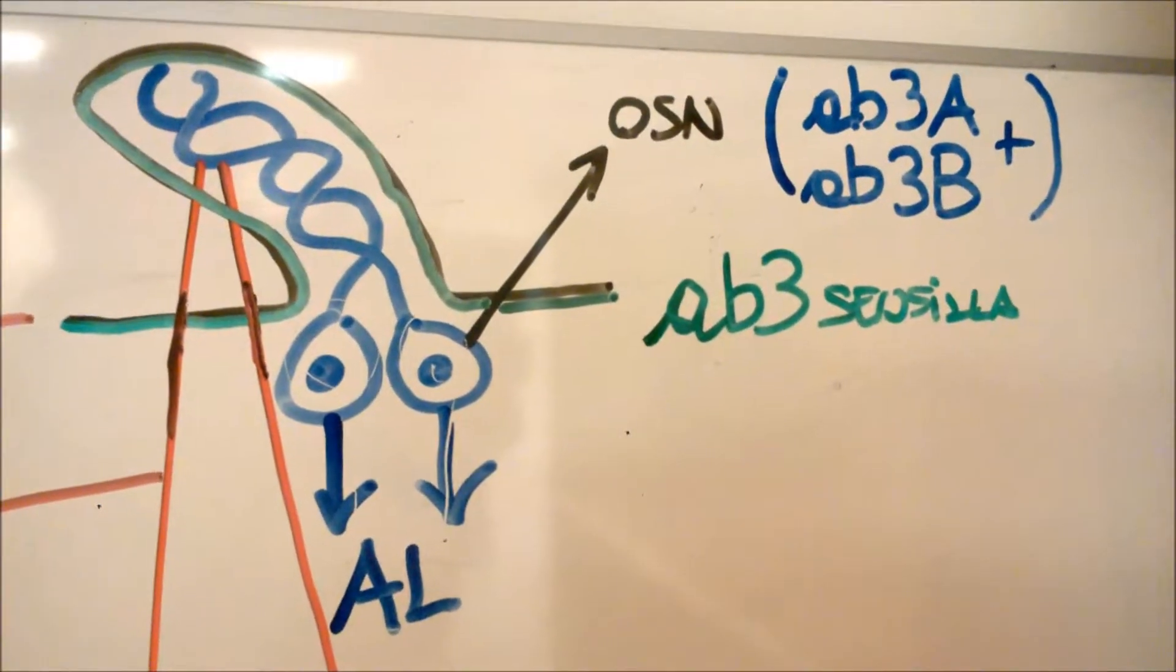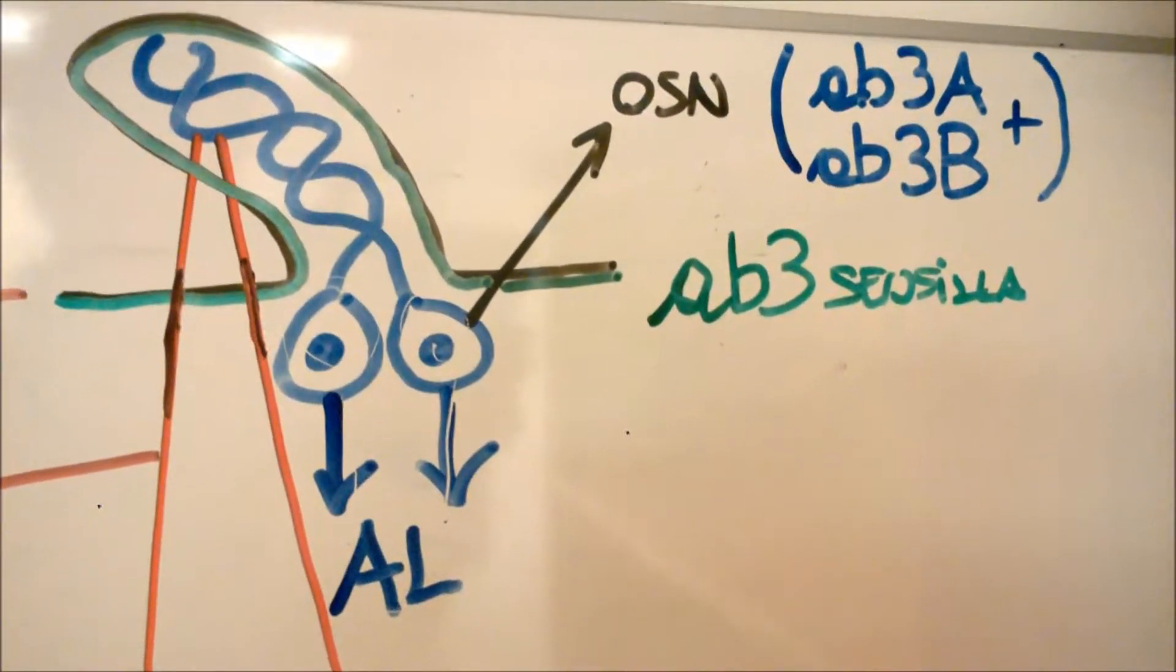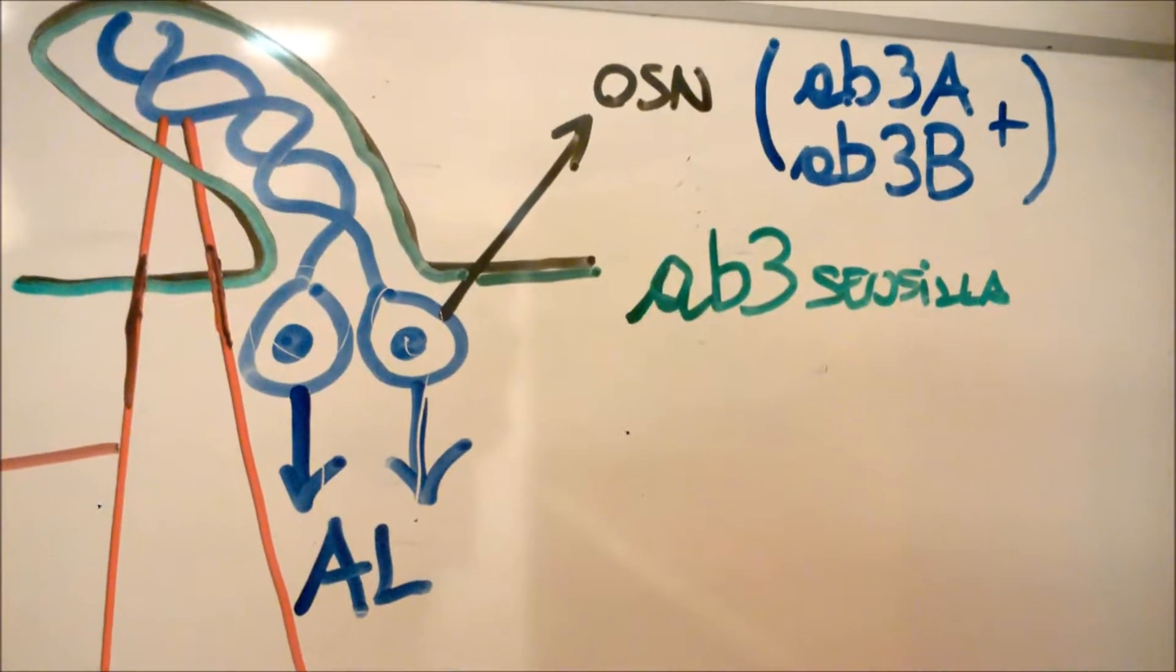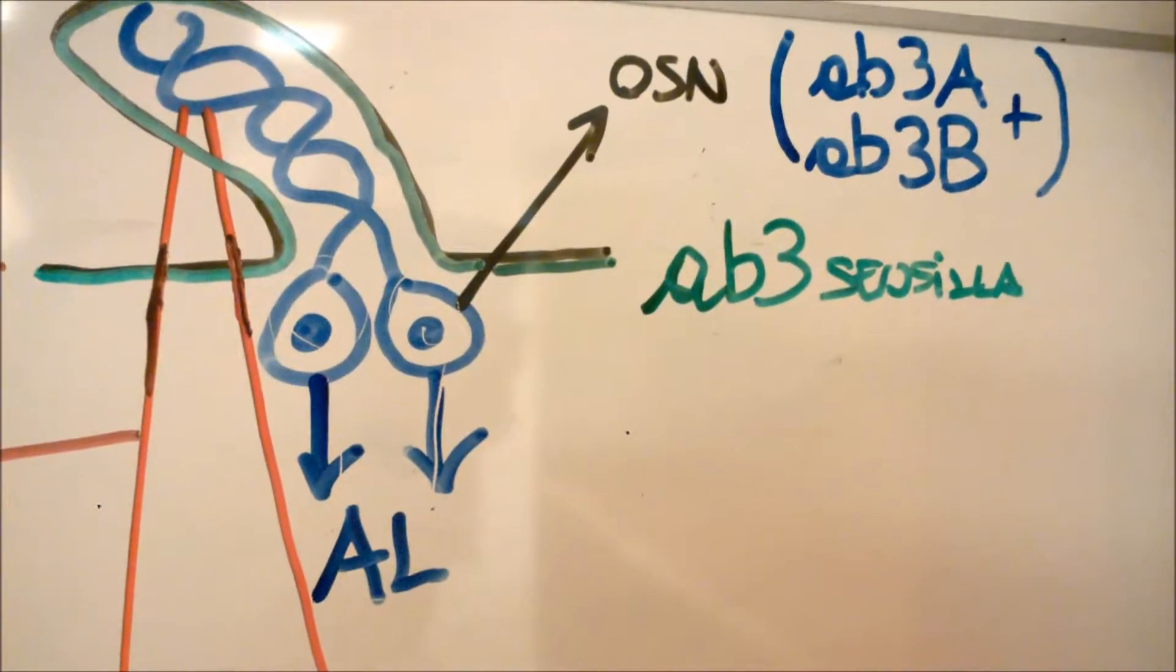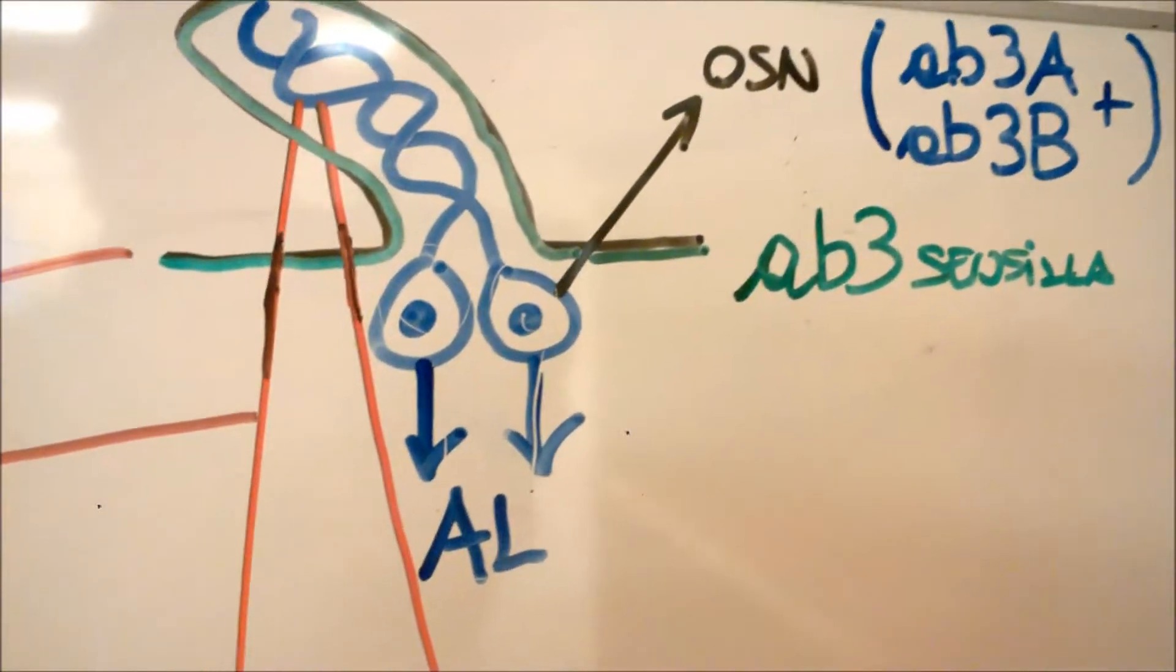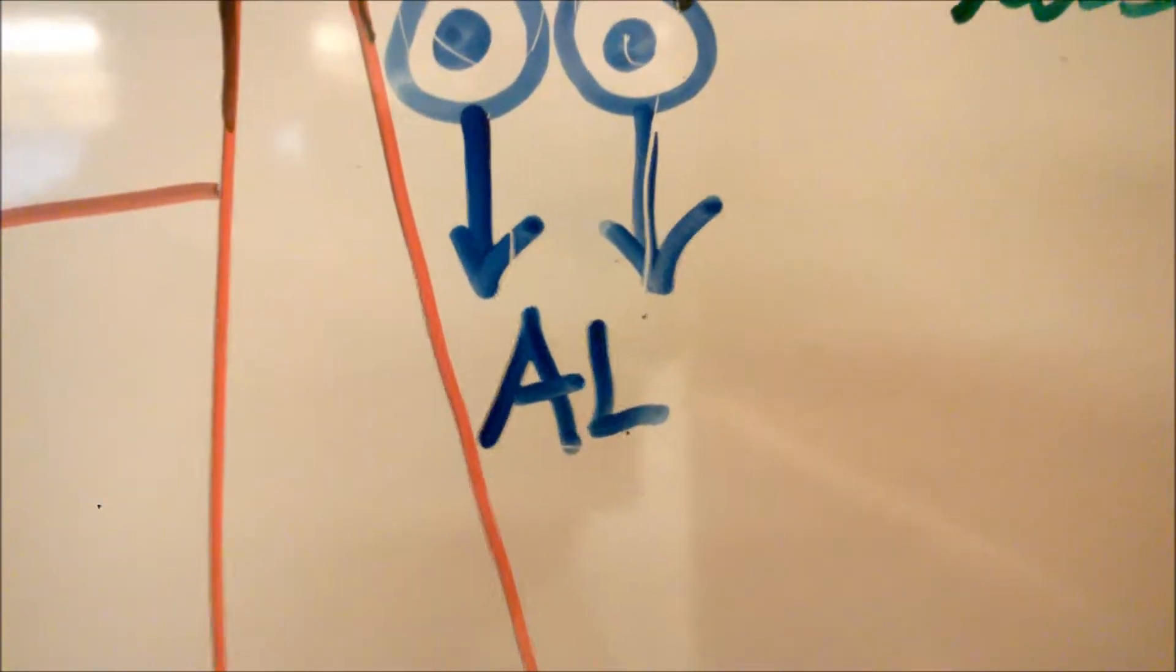For example, AB3 sensilla contain AB3A and AB3B neurons. Olfactory sensory neurons respond to odorant compounds to project their action potential to specific glomeruli of the antenna lobe.